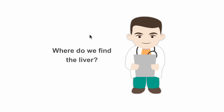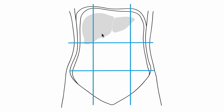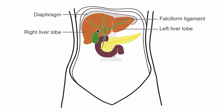We find the liver in the right hypochondriac region and the epigastric region. It lies directly beneath the diaphragm and is fixed to the lower surface of the diaphragm through the bare area, which is a region without peritoneal lining. Through the falciform ligament, it is fixed to the ventral abdominal wall. The falciform ligament is a peritoneal thickening that is thicker on its caudal border, also known as the ligamentum teres hepatis, and it forms the border between the left and right liver lobe.